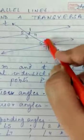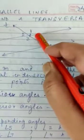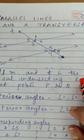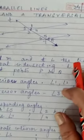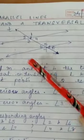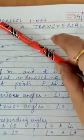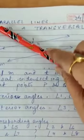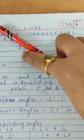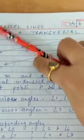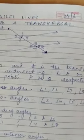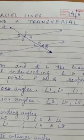Angles on the same side of the transversal — that is, interior angles — are called co-interior angles or consecutive interior angles. For example, angles 3 and 5, and angles 4 and 6, are interior angles on the same side of the transversal. These can also be called co-interior angles or consecutive interior angles.